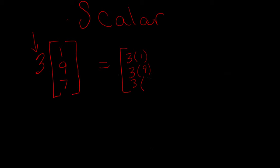You multiply each number by the scalar. Make sure your final answer is also in the matrix: three, 27, 21. And this will be your final answer.